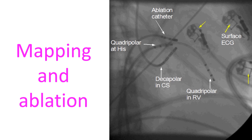Another option often used to reduce the number of ICD shocks is mapping the site of origin of the ventricular tachycardia using intra-cardiac electrodes, known as electrophysiology study. The abnormal focus can then be ablated by delivering short pulses of radiofrequency current, known as radiofrequency catheter ablation. This does not have the disadvantages mentioned in case of medications, but mapping and ablation may not be successful in all cases.